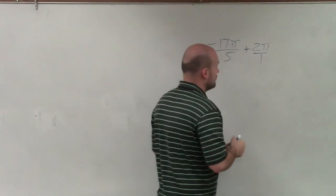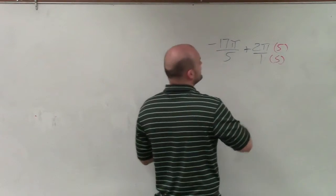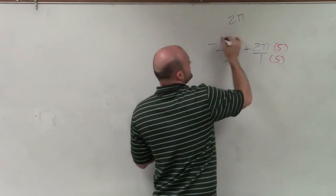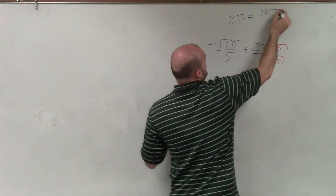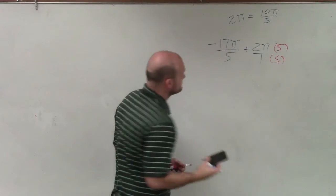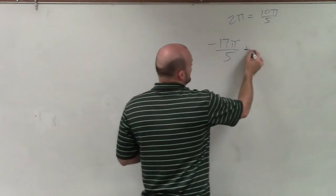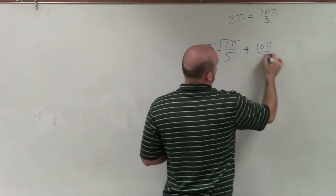So therefore, because that's really 2 pi over 1, I have to multiply by 5 over 5. So realistically, 2 pi in this case is equivalent to 10 pi over 5. So rather than adding, oh, OK. So when I do that, I get 10 pi over 5.